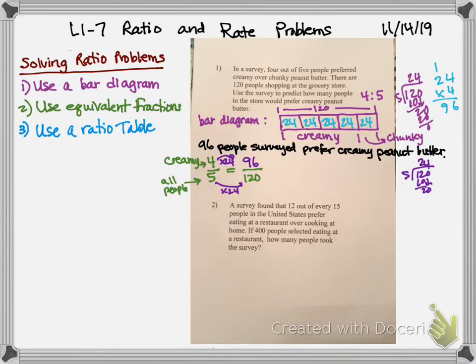I could also have set that up in a ratio table. Let's do creamy, all people. And then we had a 4, 5, and we end with a 120. So some things I might want to try is to multiply by 2 to get to the number that ends in 10. So I get 8 tenths. And then to get from 10 to 120, I would multiply by 12. And I would get to the same answer of 96.